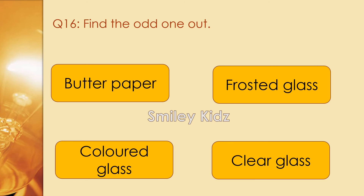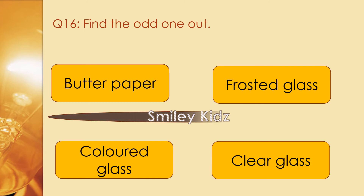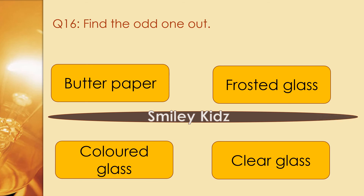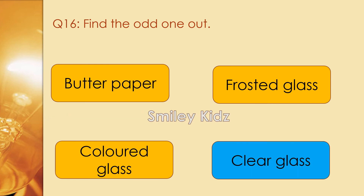Question number 16. Find the odd one out: butter paper, frosted glass, colored glass, and clear glass. The right answer is clear glass, because butter paper, frosted glass, and colored glass are examples of translucent materials and clear glass is an example of transparent materials.